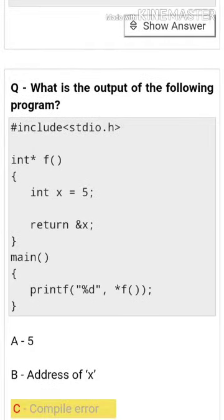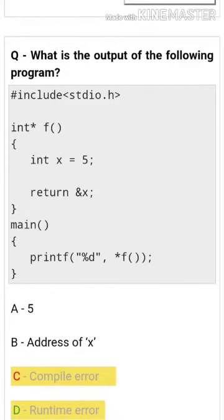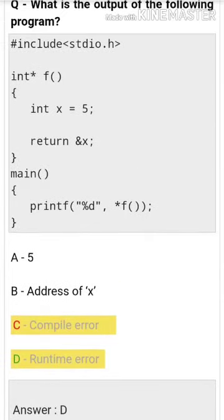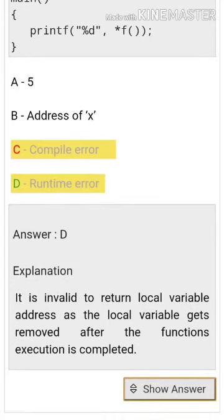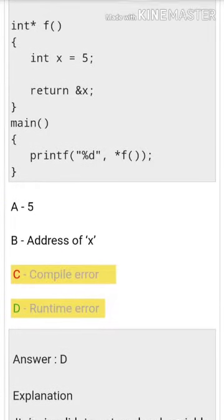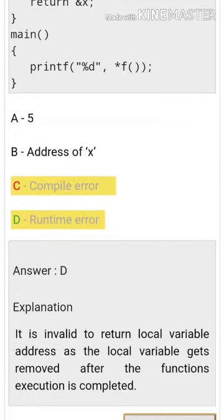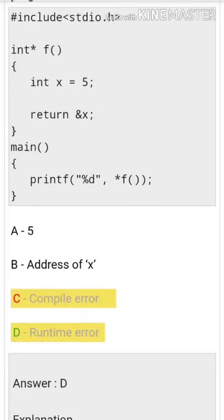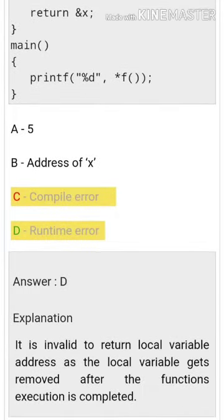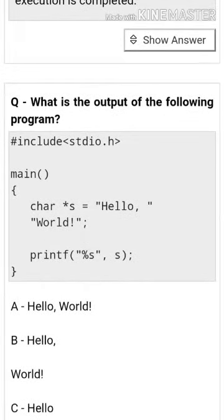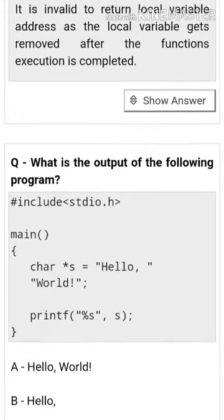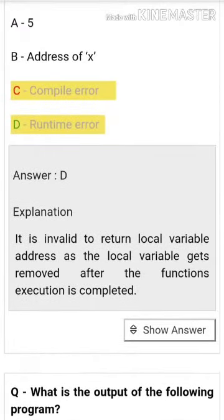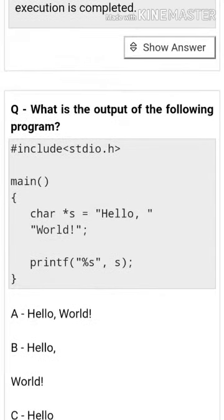What is the output of the following program? The answer is runtime error. It is invalid to return a local variable address, as a local variable gets removed after the function's execution is completed. The function returns a local reference, so at execution it produces a runtime error.